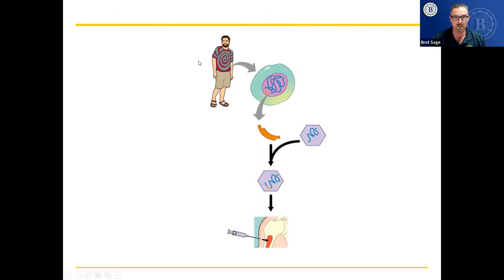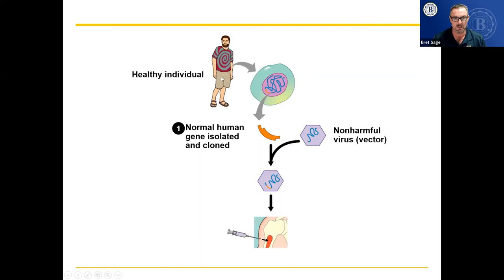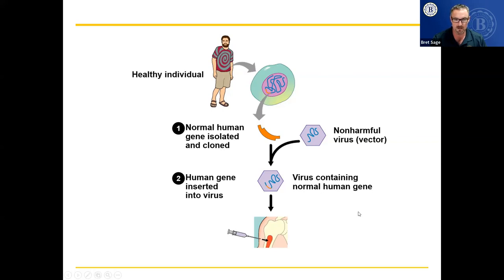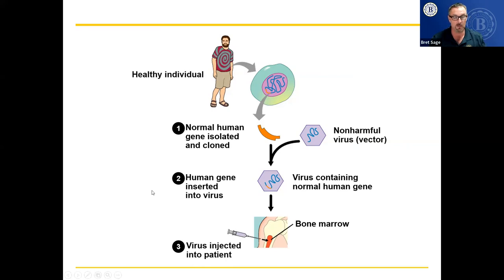So this is how it would work: the healthy individual's normal gene is isolated and cloned, put into the DNA in a virus which is the vector, the human gene is inserted into the virus, and then the virus is injected into the patient. The gene breaks its way into the affected cells, and the person is healed. This figure could be the second half of an essay question — compared to the corn and heart attack therapy figure from earlier. I would ask you to compare and contrast the two figures: how are they similar and different? That's how you get your five points.